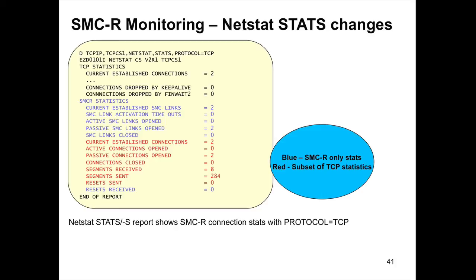For NETSTAT STATS enhancements: this existing display shows TCP statistics, and now after those TCP statistics you get new SMCR statistics. Items in blue are unique to SMC connections or links; items in red are subsets of the TCP statistics — the TCP connections using SMC. For example: two SMC links opened passively (I'm the server), two TCP connections, 8 segments received, 284 sent, no resets. This gives a quick general overview of activity across the SMC link and confirms you're using SMC.